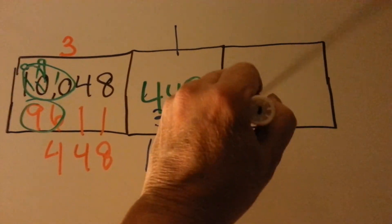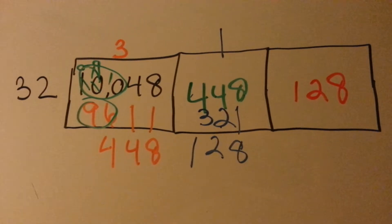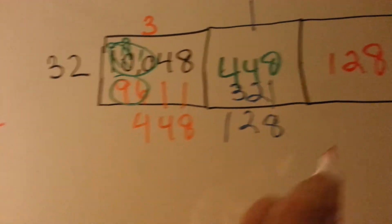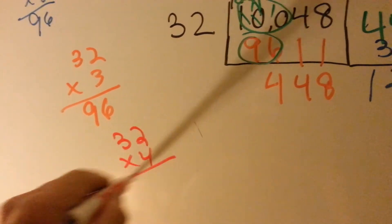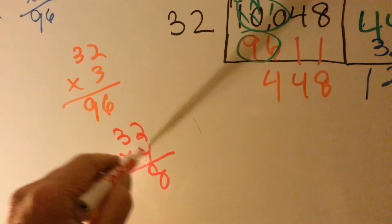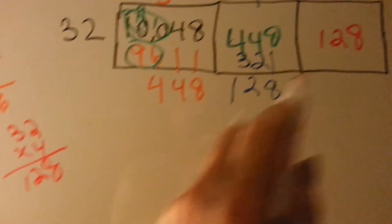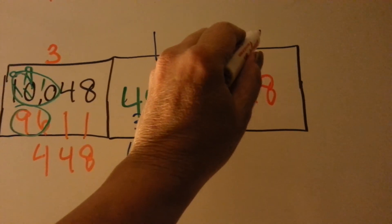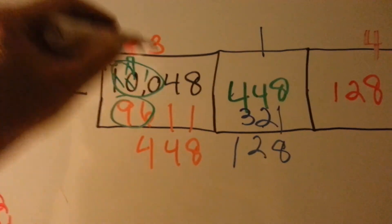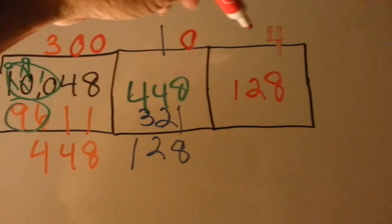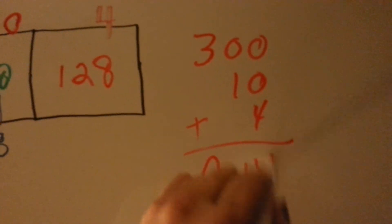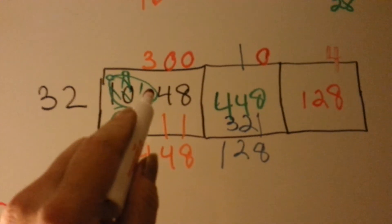So we're going to put 128 over here. And we say, how many times can 32 go into 128? Well, 32 times 3 was 96. What's 32 times 4? 4 times 2 is 8, 4 times 3 is 12 — look at that, 128. 4 goes in perfectly. So we're going to put that over the 8. And now we're going to look at all our empty spaces here — that becomes 300, that's 10, and that's 4. And if you add them up, you have 314. And that's how many times 32 goes into 10,048.